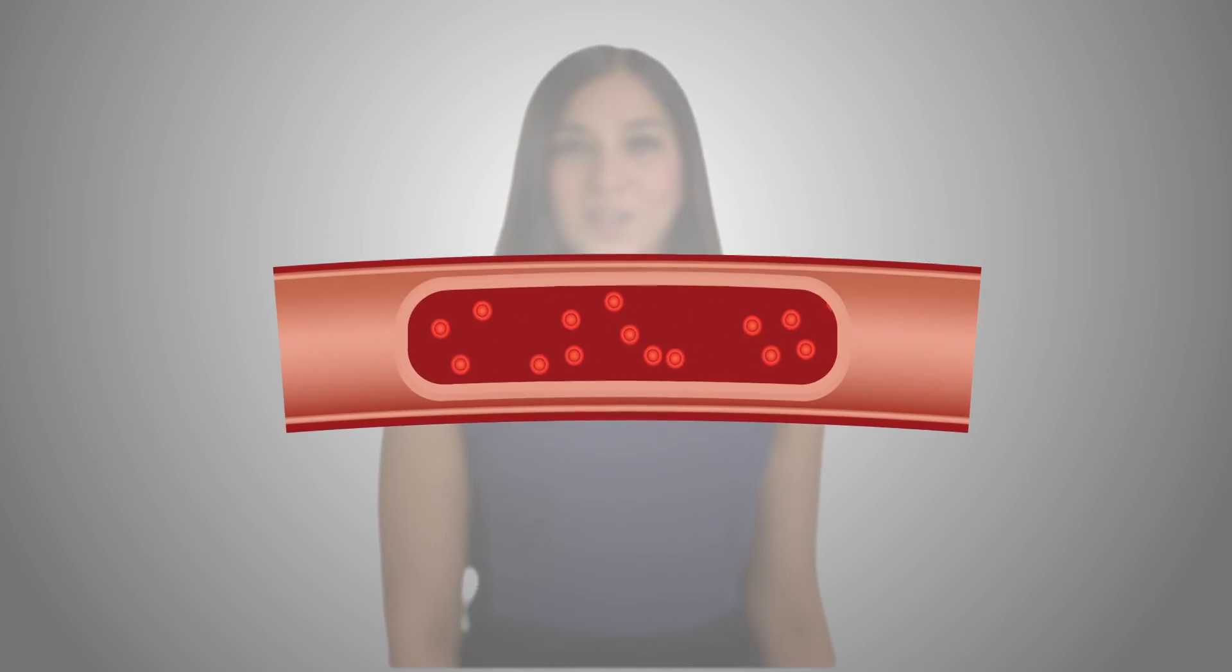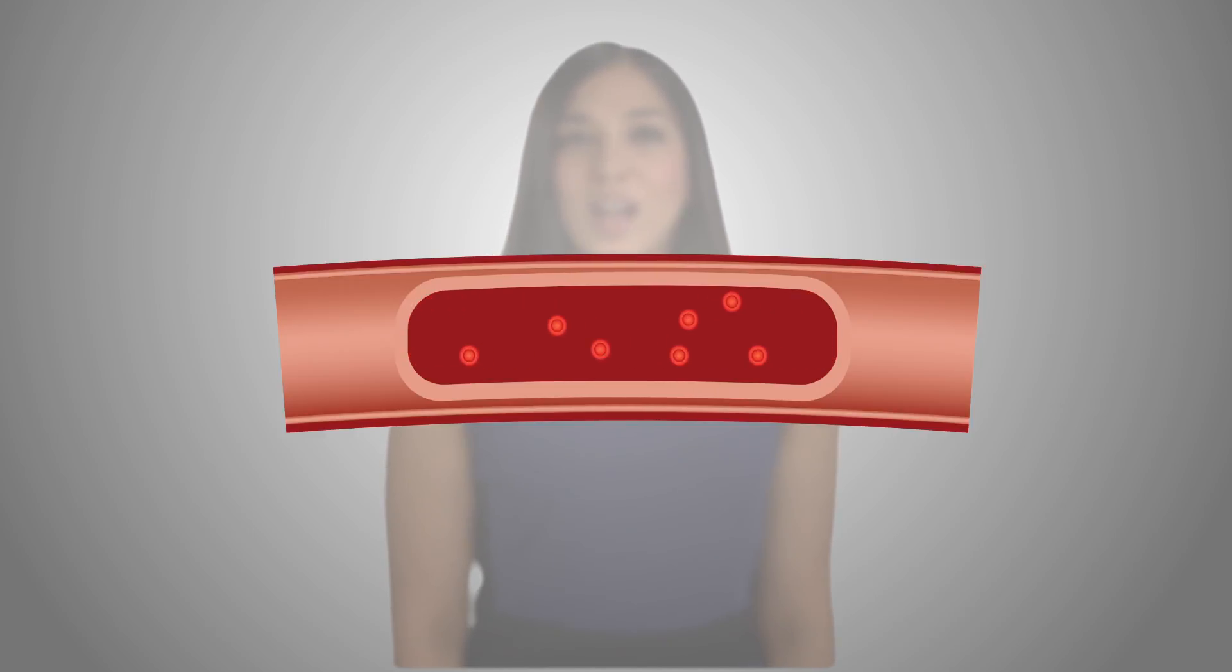Over time, this strain can have more of an impact. Your arteries can become thicker and inflexible, making the heart have to work even harder to pump blood. The high pressure can damage the lining of the arteries, causing plaques or blockages to form, and this is how strokes and heart attacks happen.